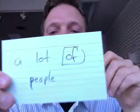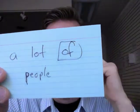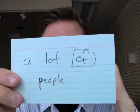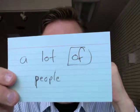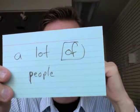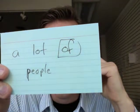Here's another one: 'a lot of people.' Slow: 'a lot of people.' But fast: 'a lotta people.' A lotta people live in this city. A lotta people have a car.